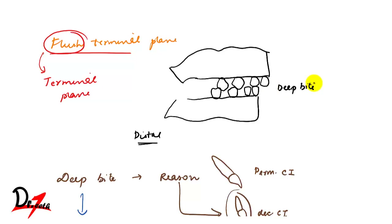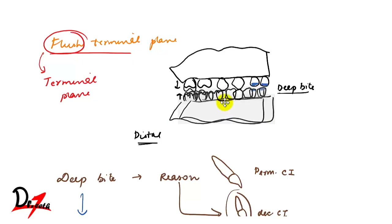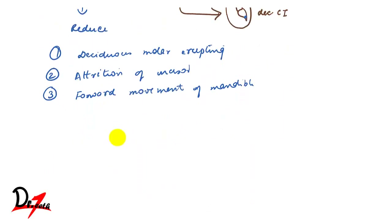This deep bite will reduce in the later stage of development. When the molars erupt, they are larger, so the deep bite reduces. Attrition reduces tooth size and hence the deep bite. The forward placement of the mandible also helps reduce the deep bite. These were some features of the deciduous dentition — in the next video we'll study the mixed dentition period.